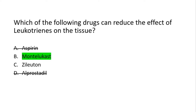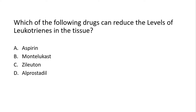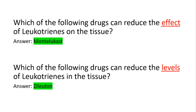Now compare that with another question: which of the following drugs can reduce the levels of leukotrienes in the tissue? The answer here is zileuton, because it inhibits the enzyme 5-lipoxygenase, thus we will have less leukotriene in the tissue. So it is the same scenario but with one word different — montelukast acts on the receptor, reducing the effect or action of leukotrienes; zileuton acts on the enzyme that makes leukotrienes, thus reducing their level and concentration.